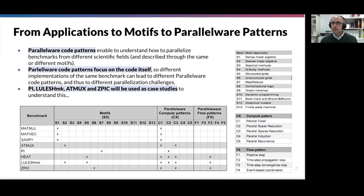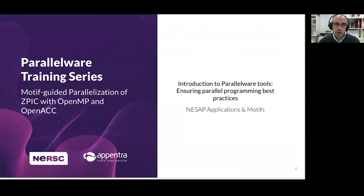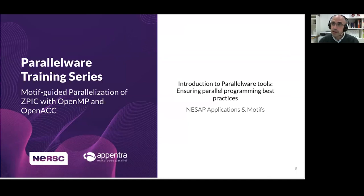This is what we have prepared for these slides. We wanted to show you by example how to go from real big applications, why developing mini-apps or proxy applications is very interesting and worthwhile — an effort done by many people in HPC centers — and how to relate this to Parallelware code patterns to understand both the science and the code. In the next steps, we will learn how to use this information as a guide to parallelize code for CPU and GPU using OpenMP and OpenACC.